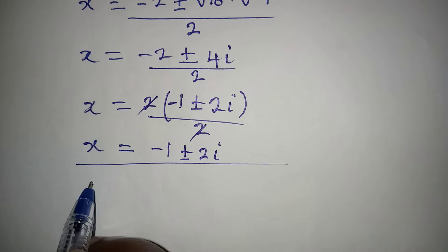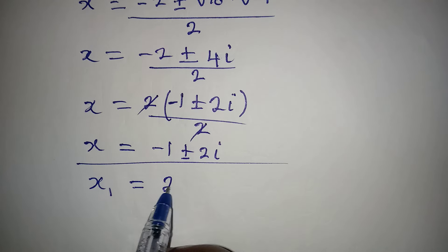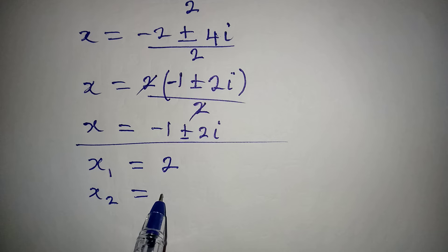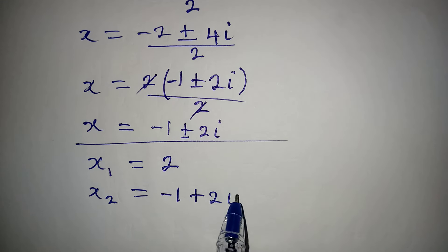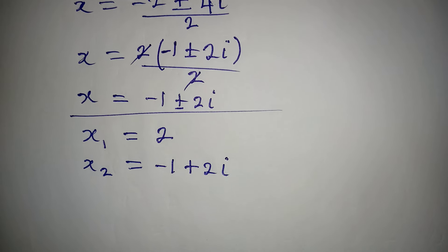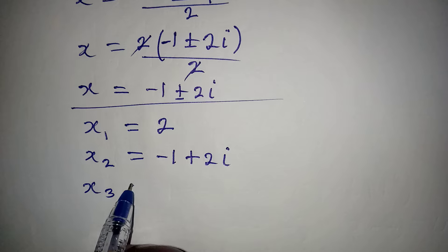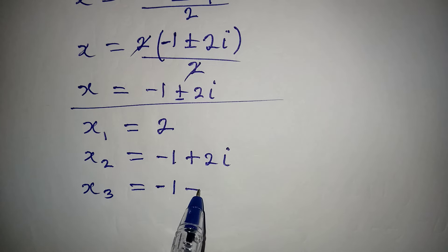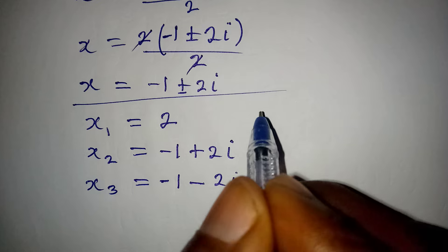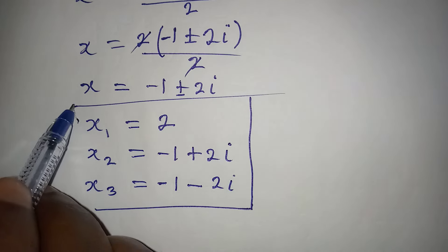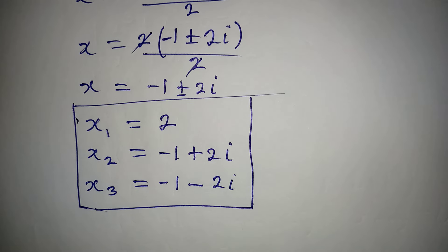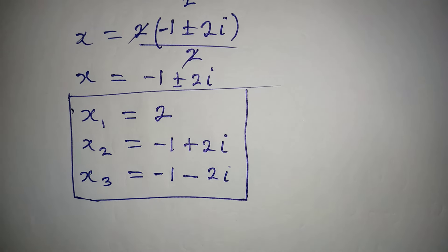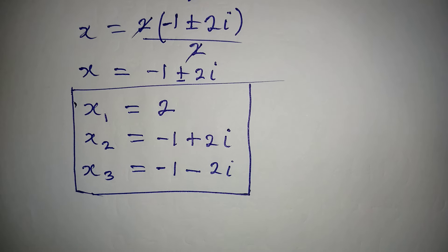Let's bring our three solutions together. x₁ equals 2. x₂ equals minus 1 plus 2i. x₃ equals minus 1 minus 2i. It is only x₁ that is the real solution; x₂ and x₃ are complex solutions. Thank you for watching.